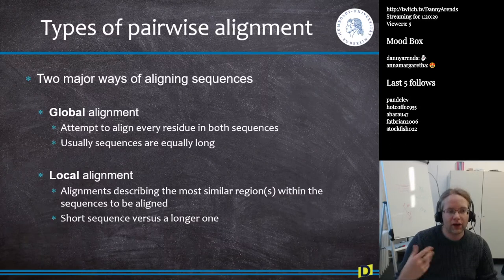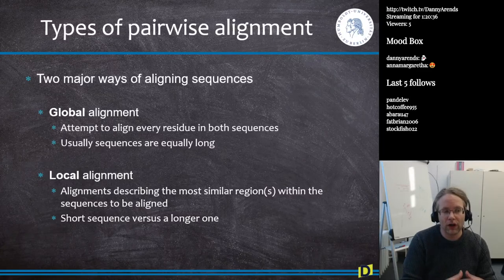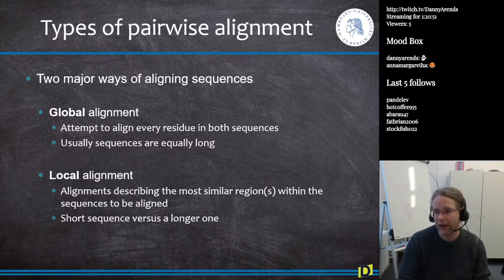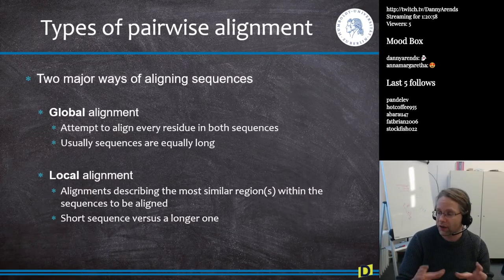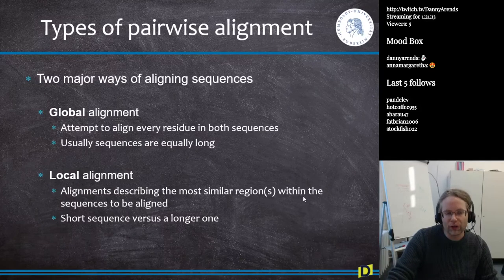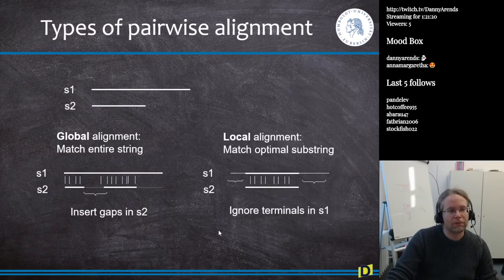A global alignment attempts to align every residue in both sequences, and you use it when aligning two sequences which are more or less equally long. If you have a very big difference in length — for example, a gene which is 5,000 base pairs long aligned to a genome billions of base pairs long — then you need to use local alignment. A local alignment describes the most similar regions within the sequences.